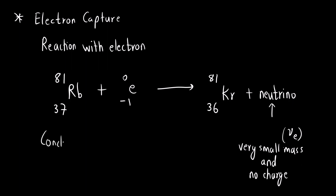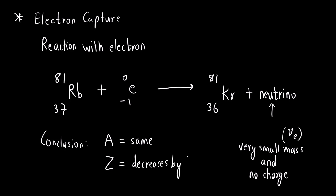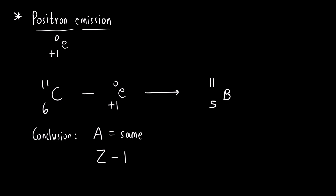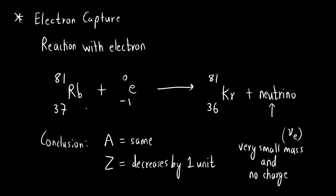The conclusion for electron capture: the atomic mass number remains the same and the atomic number decreases by 1 unit. This is similar to positron emission — the difference is that positron emission involves loss of a positron while electron capture involves adding an electron, but the conclusion is the same. Thank you so much.